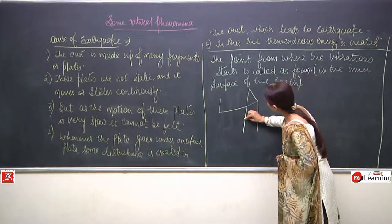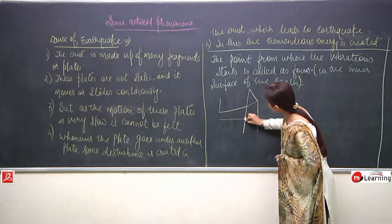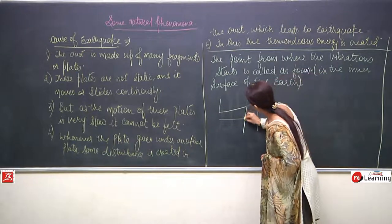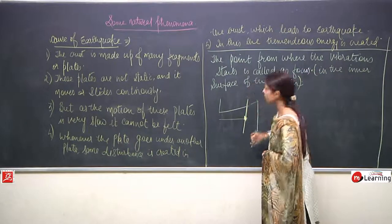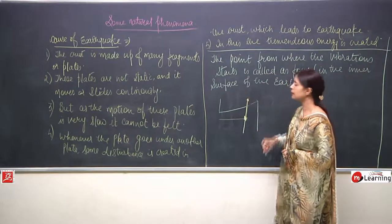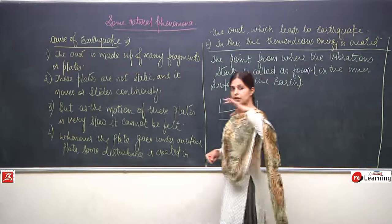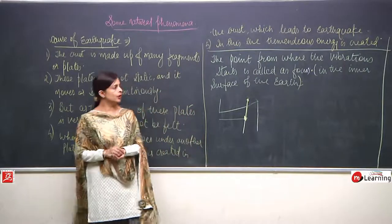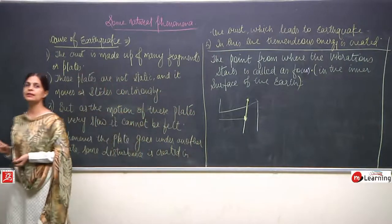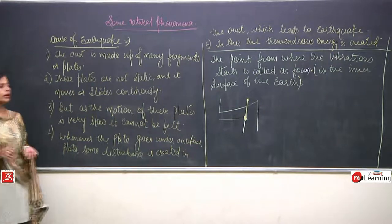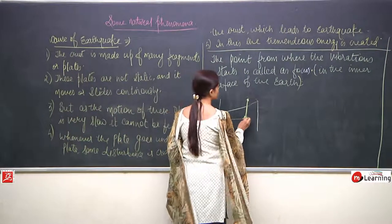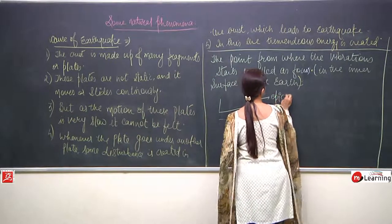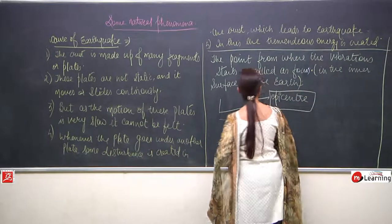Now, vertically upwards from the focus — on the surface of the Earth — there is another point. When the focus point is taken vertically upwards to the surface of the Earth, that point is known as the epicentre.